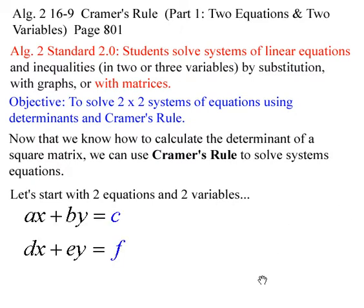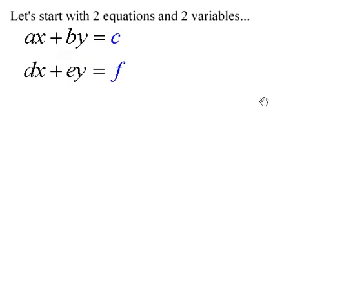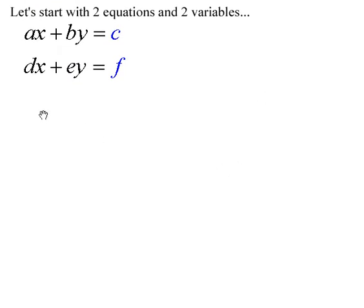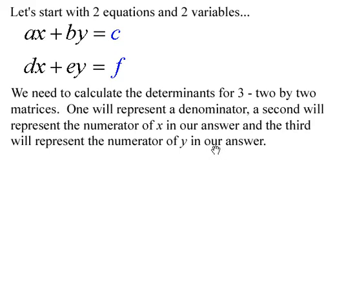In today's lesson, we're going to start with two equations and two variables. The first thing we need to do before we even learn Cramer's Rule is to line up our system of equations so that we have some coefficient of x plus some coefficient of y equals some constant, and the second equation is in standard form as well. We're going to create three two-by-two matrices: one matrix will represent a denominator, the second will represent the numerator of x, and the third will represent the numerator of y.